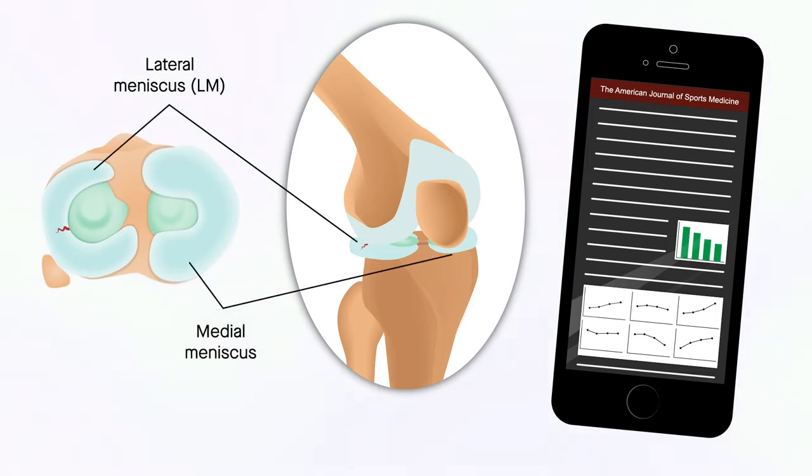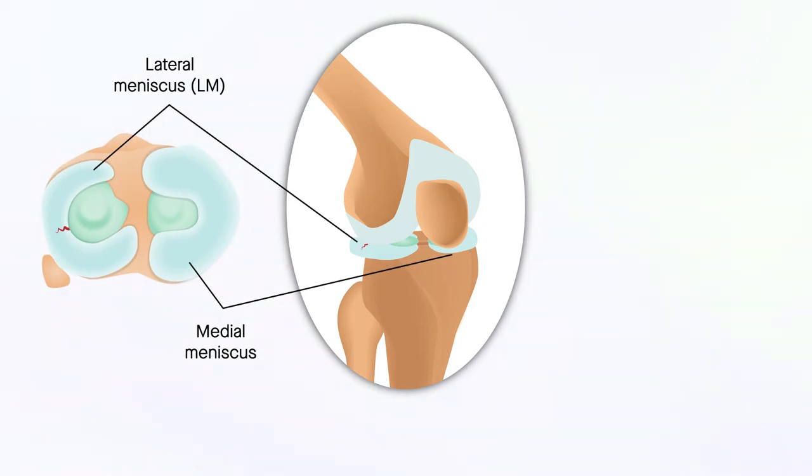Tears of the lateral meniscus, or LM, are common sports injuries. Associated meniscal displacement is sometimes visible on MRI, which can aid in diagnosis of a tear.